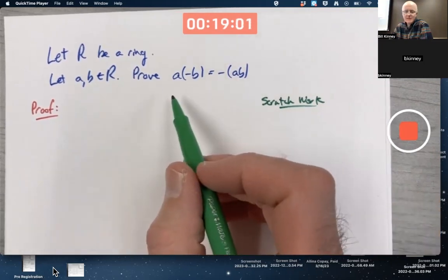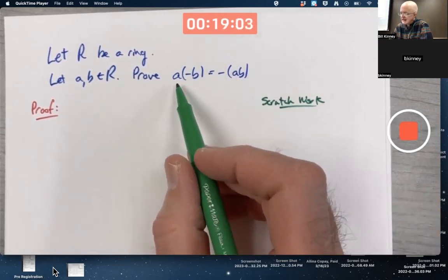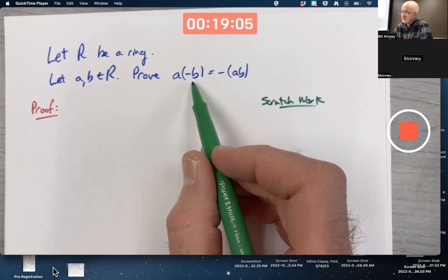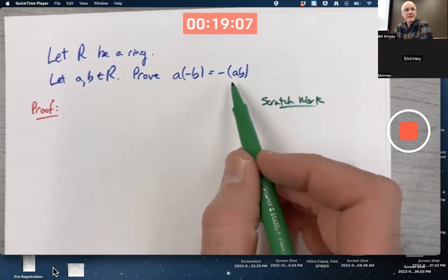We're trying to prove that if A and B are elements of a ring, then A times the additive inverse of B is the additive inverse of A times B.